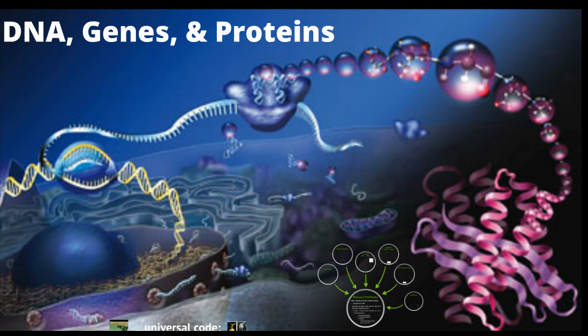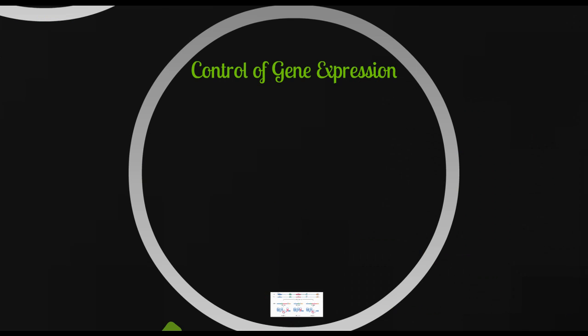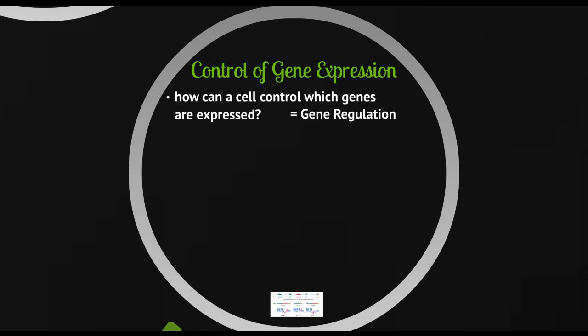Now that we know a little bit about the process of converting a specific gene into a protein, we need to think about how a cell controls which genes it expresses and at what time. Using our restaurant analogy, how does the restaurant know if it's breakfast, lunch, dinner, or dessert? How does a skin cell know what it should make? How does a pancreas cell know what it should make? The answer to how gene expression is controlled is gene regulation.